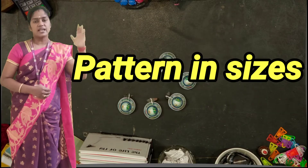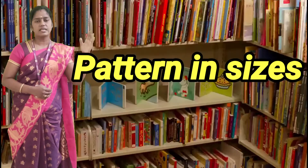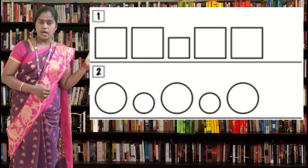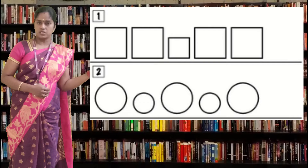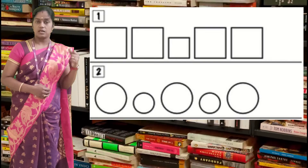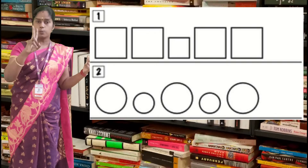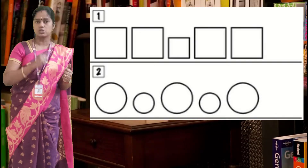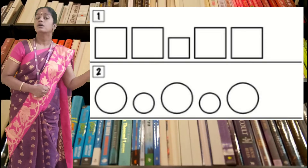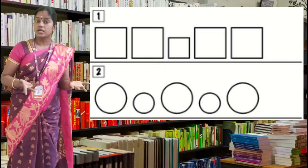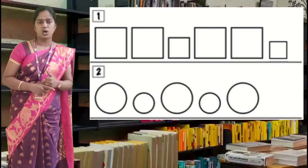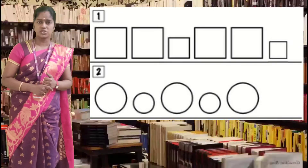Now let's see patterns in sizes. Look at the image — a big square, again a big square, then a small square. It follows a rule: two big squares and a small square. Next, again two big squares — after that what comes next? Yes, it is a small square. Very good, children.